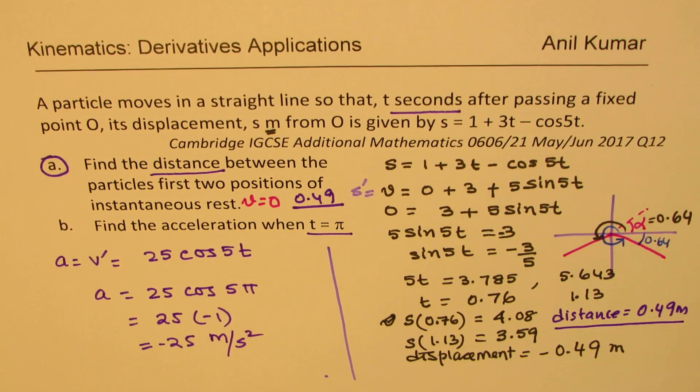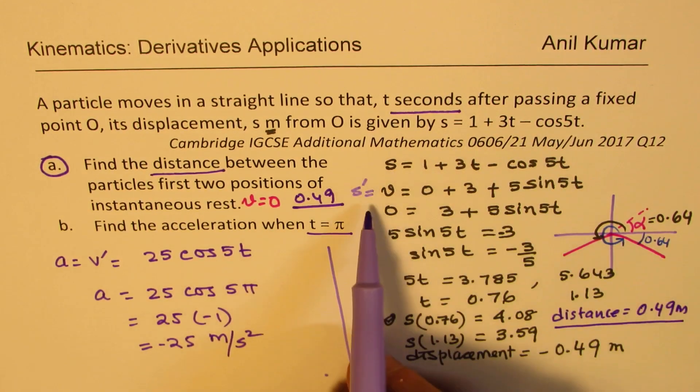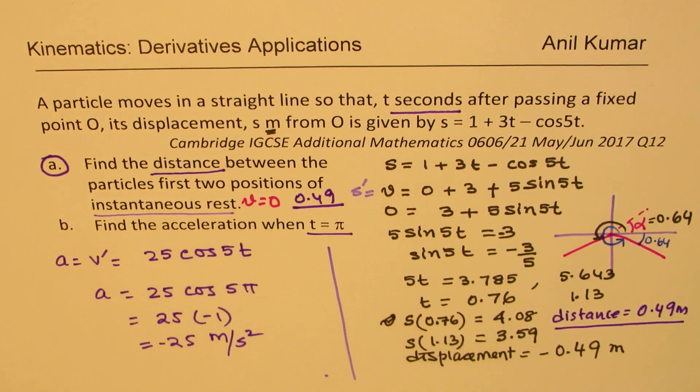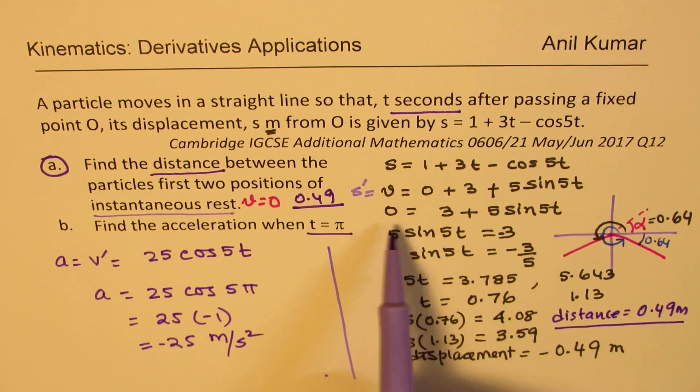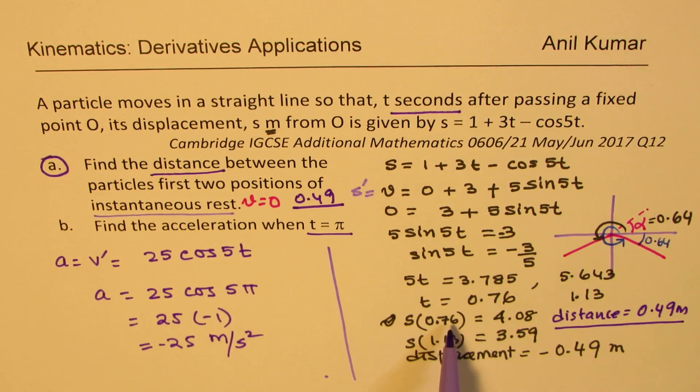So what we have done here is that we had displacement. So from displacement we found velocity as the first derivative of displacement. At rest means velocity is 0. Equated the equation to 0 to find the first two times. After finding the times we found their position, and difference between the position gave us the distance. This distance should always be positive.